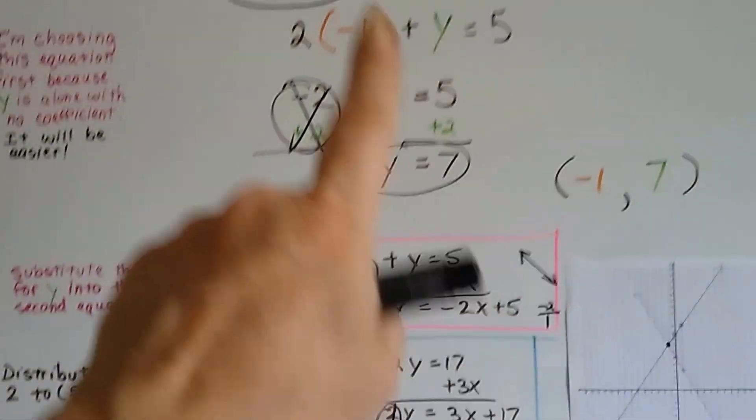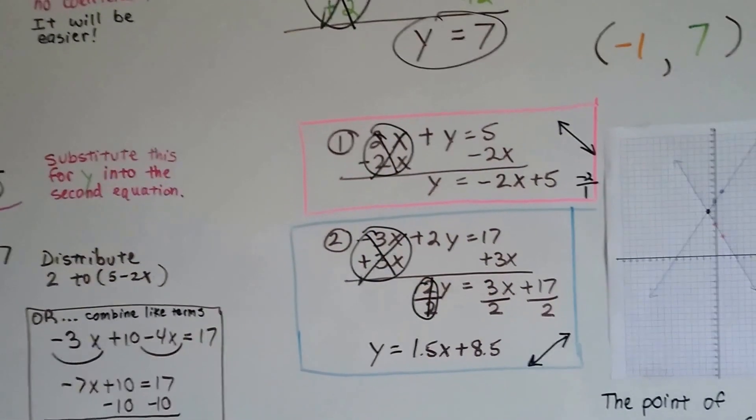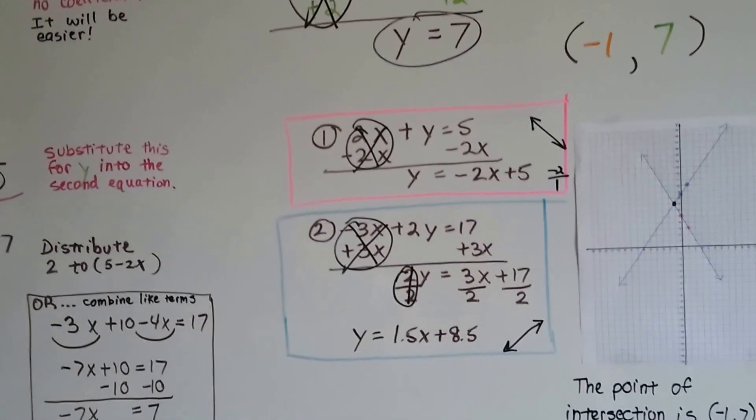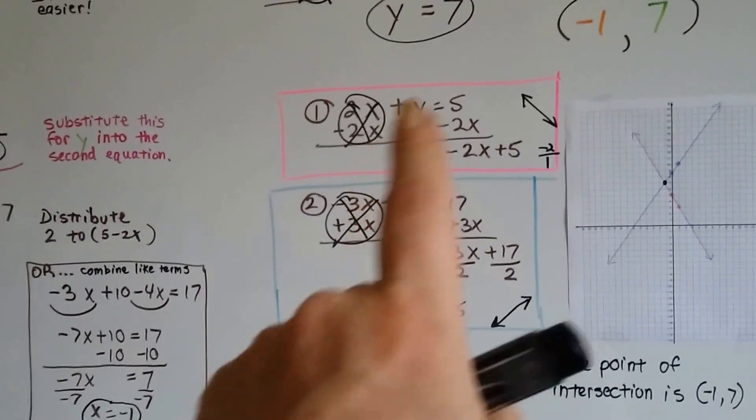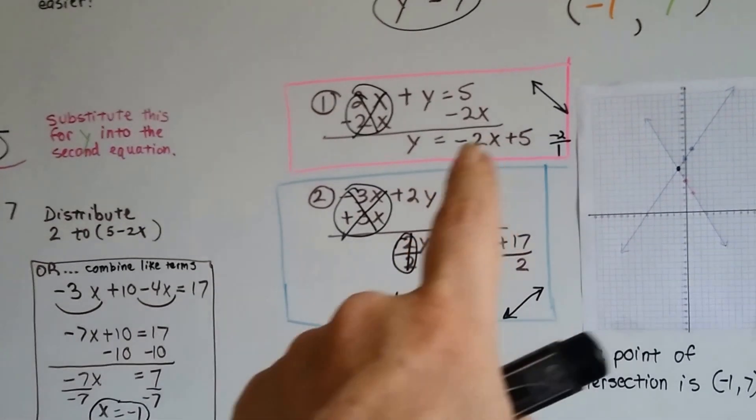Once you get what x and y values are and you get your ordered pair, make sure to put them into slope-intercept form because it's so much easier to graph them because you know where it hits the y-axis, your y-intercept, and you know what your slope is.